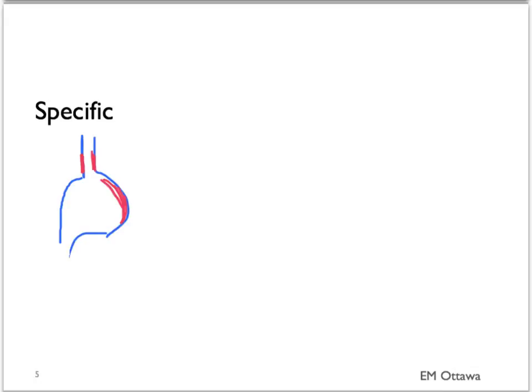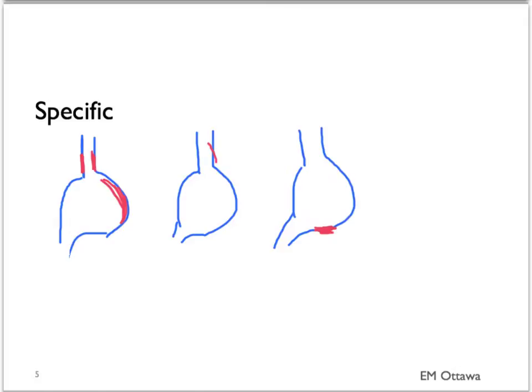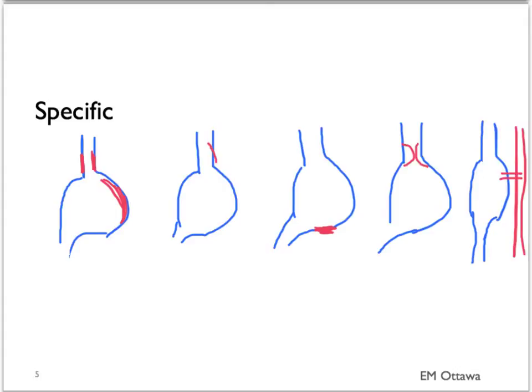Upper GI bleed can be caused by a few specific causes. They include esophagitis and gastritis, Mallory Weiss tears, peptic ulcer disease, esophageal varices or more rarely gastric varices, and the dreaded aortoenteric fistula. Let's look at the specific treatment for each cause.